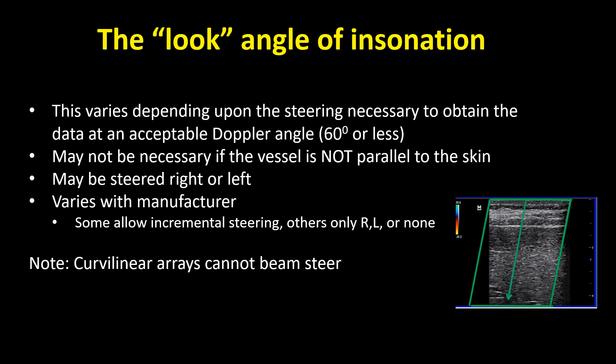Let's discuss the look angle of insonation. This varies a lot depending upon the steering necessary in order to obtain the data at an acceptable Doppler angle — that is, one that's 60 degrees or less, so we get good quality data. Steering may not be necessary at all if the vessel is not parallel to the skin line. Generally, we can steer the beam left or right, or no steering straight down. This varies somewhat with the manufacturer. Some manufacturers allow incremental steering, others only right or left.